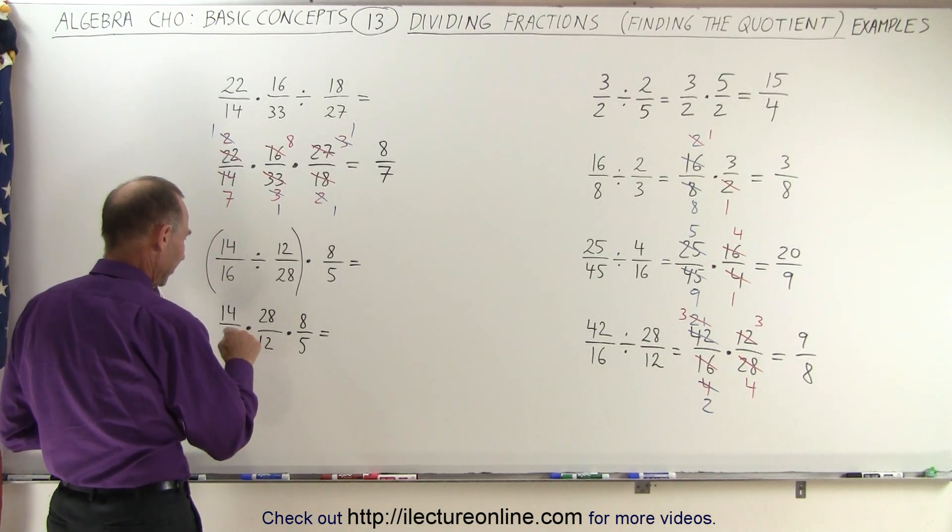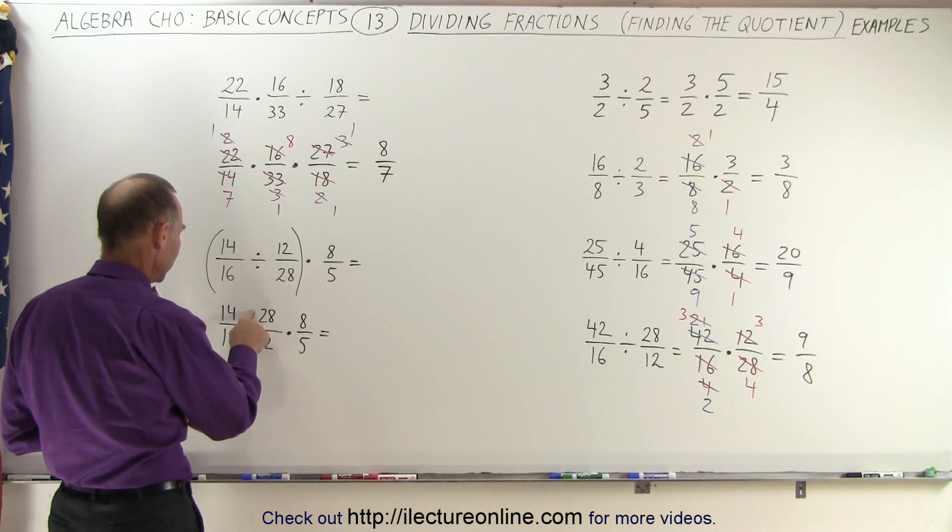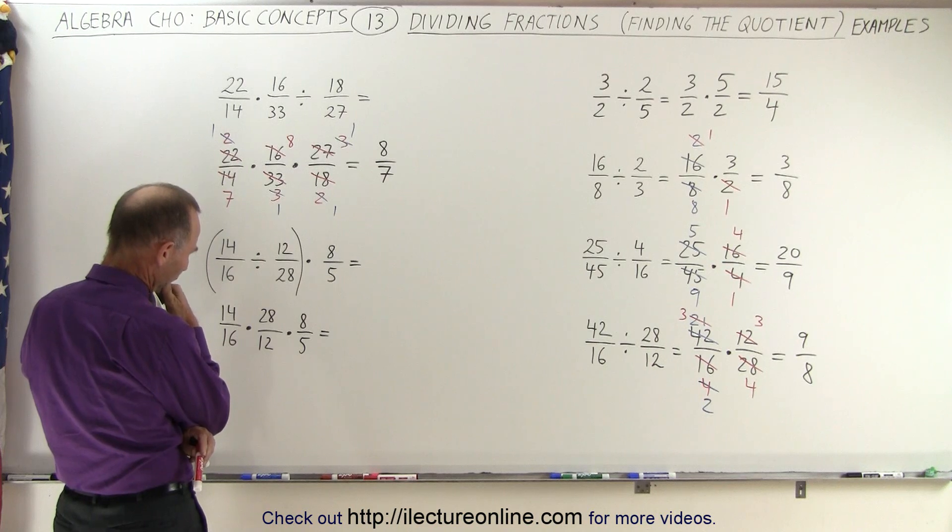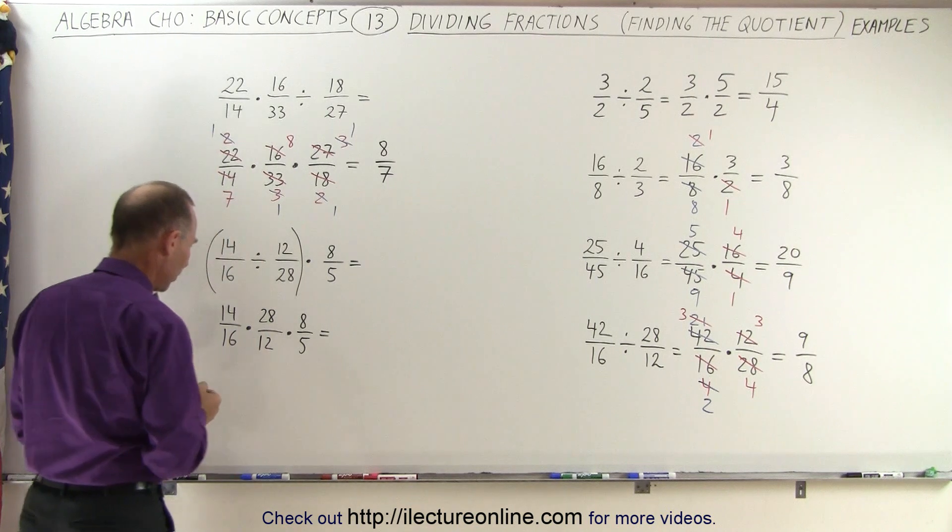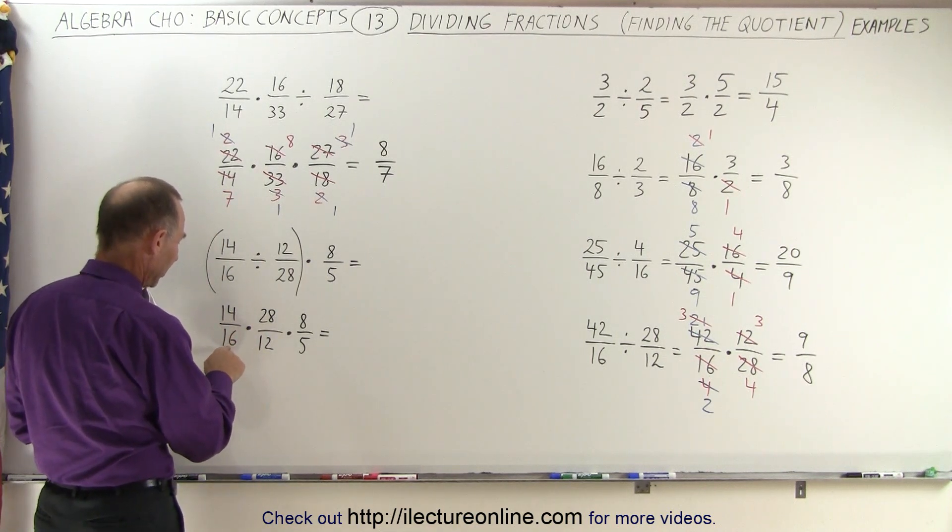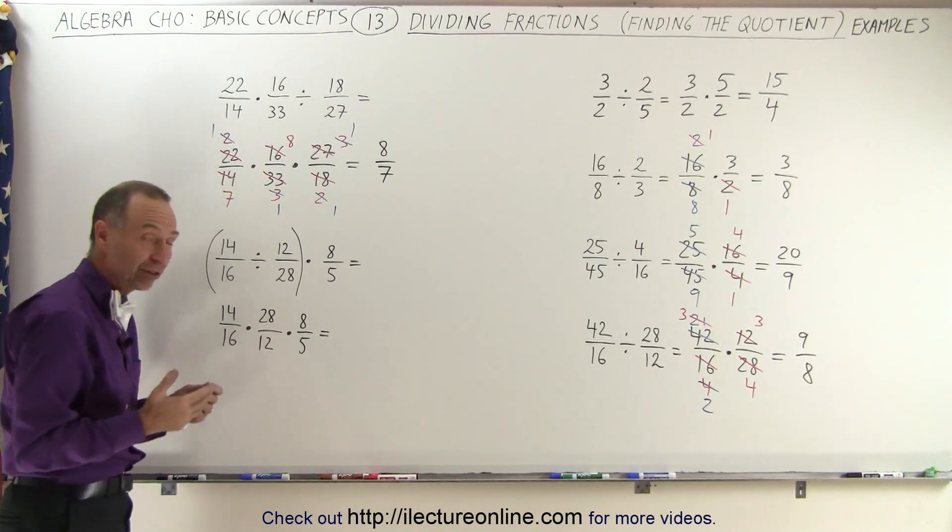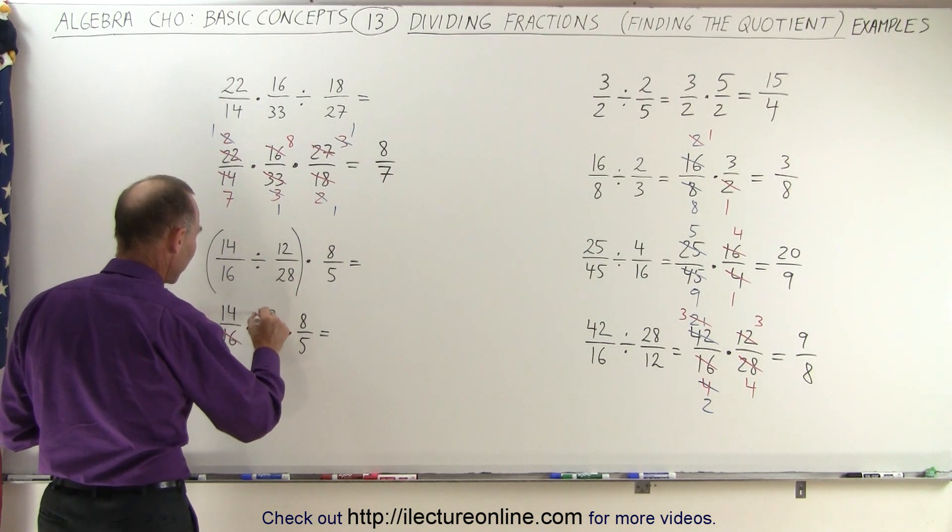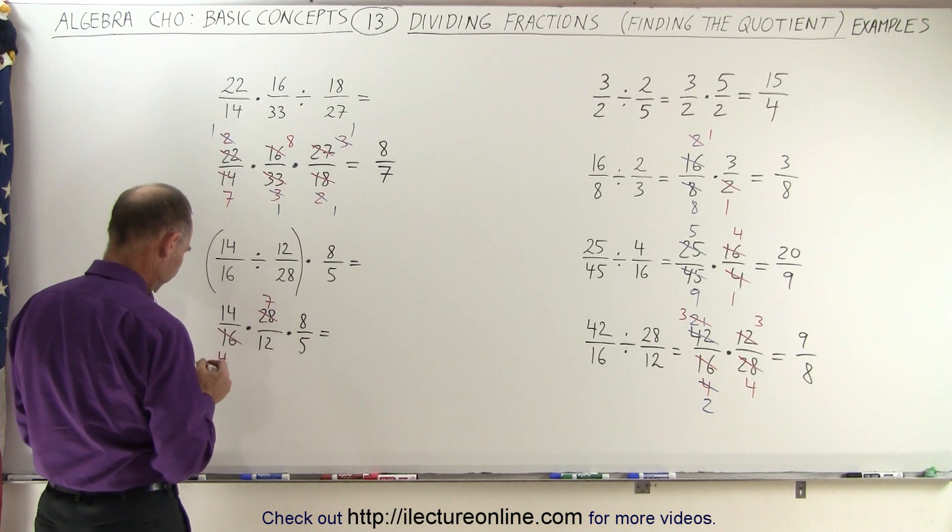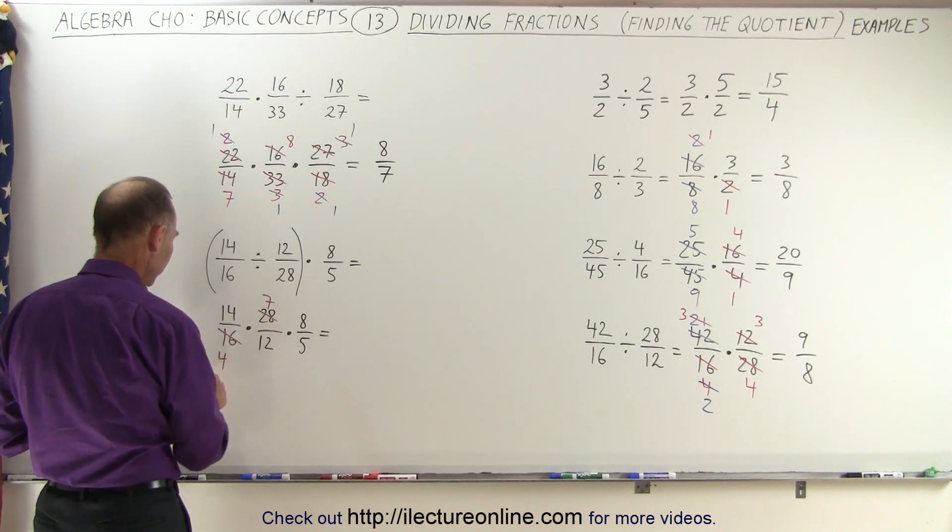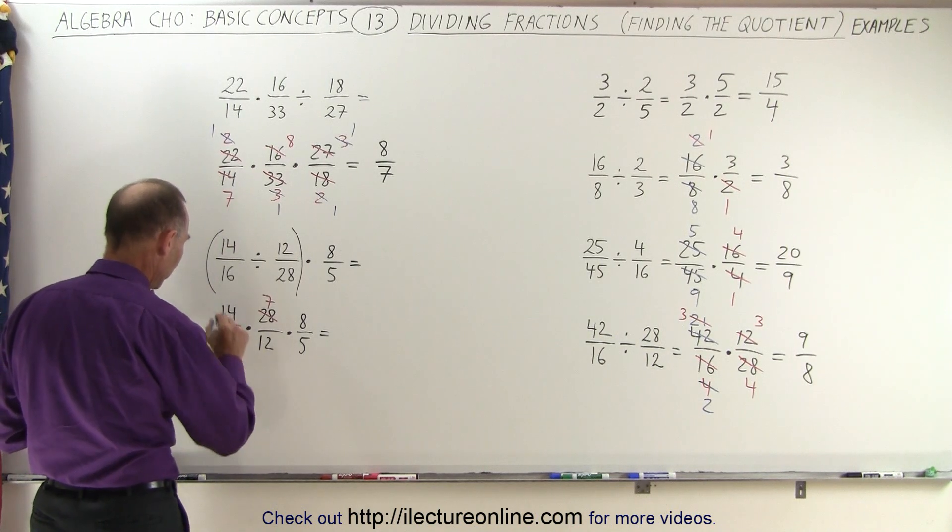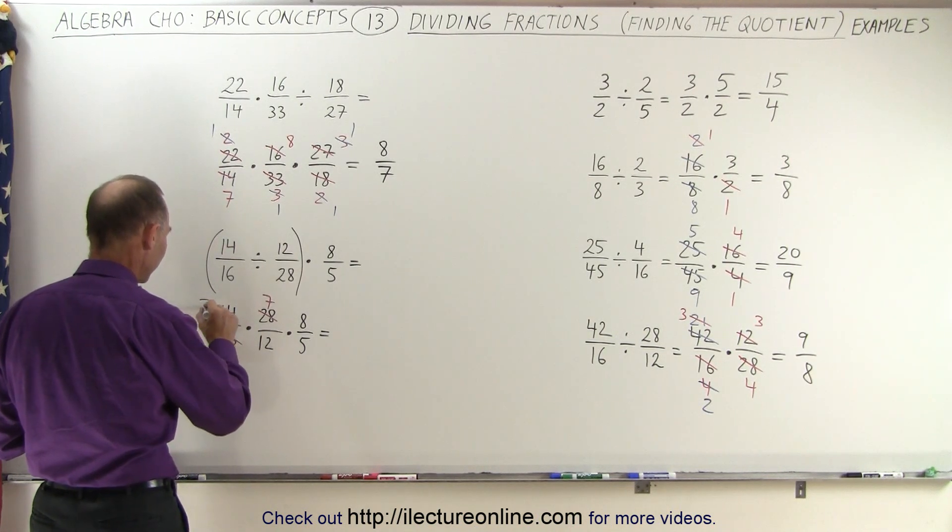We'll reduce. We have a 28 here, and a 16, and a 12, and a 5. Well, to make it simple, let's start dividing by 2 and see what we get. Or actually, 16 and 28 are actually divisible by 4. So let's start with that. 16 divided by 4 is 4, 28 divided by 4 is 7. 4 and 14, well, they're both even. So 14 divided by 2 is 7, 14 divided by 2 is 7. We have an 8 and a 2, so here we can see that 8 divided by 2 is 4, 2 divided by 2 is 1.